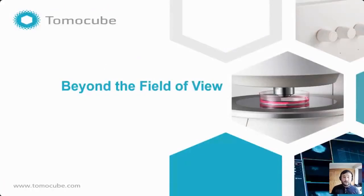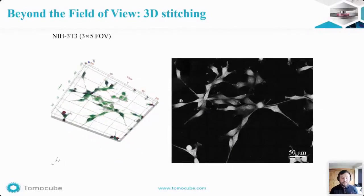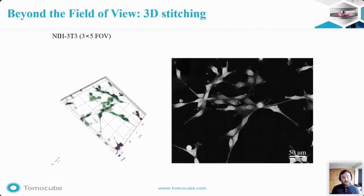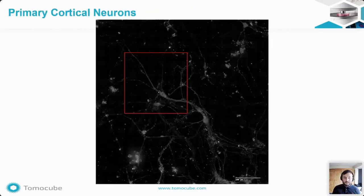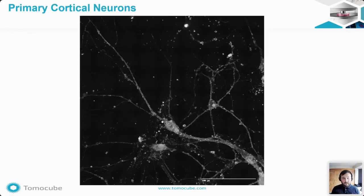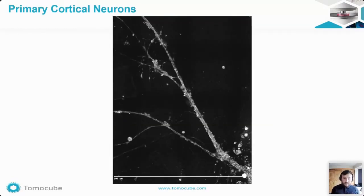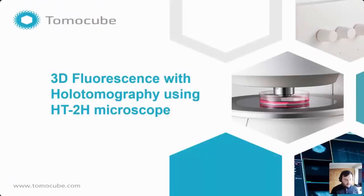Going beyond the field of view — as mentioned, we are limited by the size of the field of view, and this was overcome by the use of a stitching functionality. This offers real 3D datasets of a bigger field of view, with image quality and measurements remaining as accurate as a single field of view. As we can see with these primary cortical neurons, when we zoom in, we can view the whole area in 3D without losing any details, as seen in this cropped image. This is done in a label-free manner using just the intrinsic refractive index information of the sample itself.